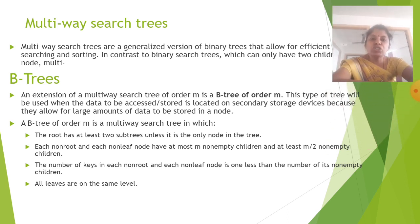B-trees. An extension of a multiway search tree of order M is B-tree of order M. This type of tree will be used when the data to be accessed or stored is located on secondary storage device because they allow for large amount of data to be stored in a node. B-tree of order M is a multiway search tree in which the root has at least two subtrees unless it is the only node in the tree. Each non-root and each non-leaf node have at most M non-empty children and at least M/2 non-empty children. The number of keys in each non-root and each non-leaf node is one less than the number of its non-empty children. All leaves are on the same level.